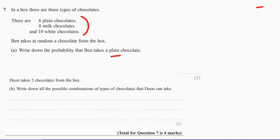Write down the probability that Ben takes a plain chocolate. Well, there are 6 of them. If we add together the number of chocolates we've got, there are 24 chocolates altogether. So the probability that Ben picks a plain chocolate is 6 over 24, which equals a quarter.